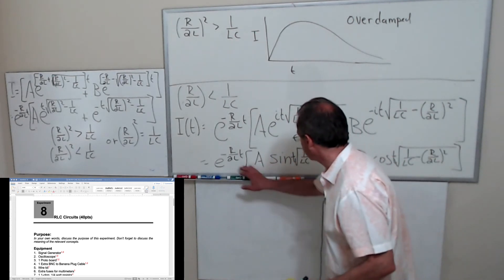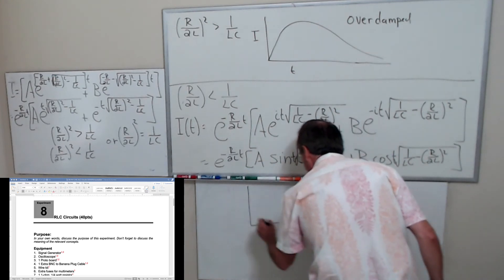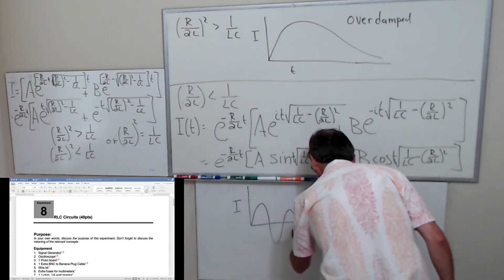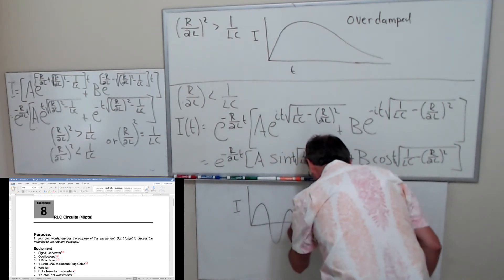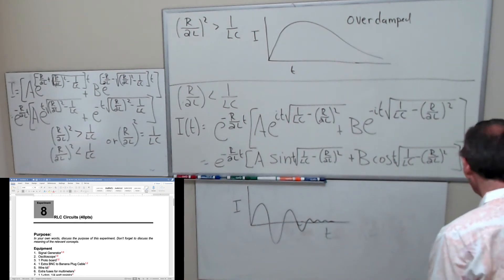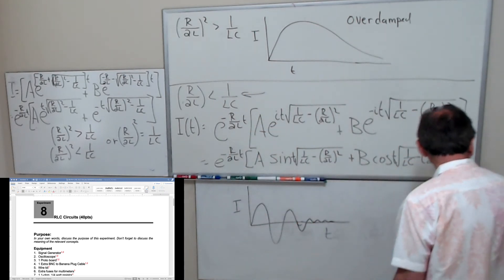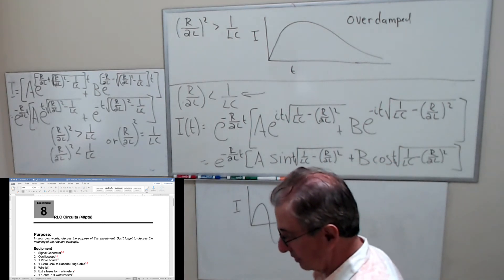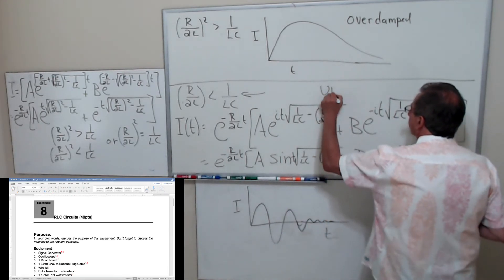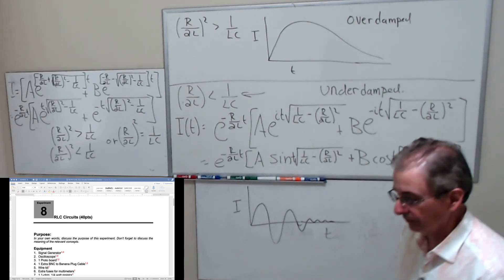Basically I have a sine function with a decaying exponential. If I plot i as a function of t, it looks like a damped oscillation. As long as you satisfy this condition (R/2L)² < 1/LC, you will get something that looks like that oscillating decay. This is called underdamped. If you took Physics 215, you actually looked at the solutions of this differential equation.